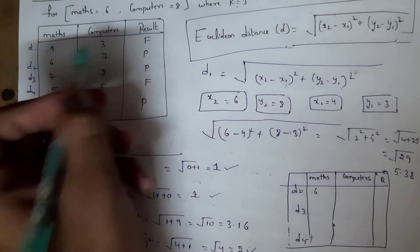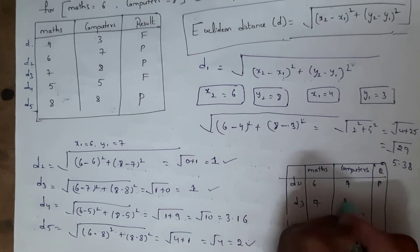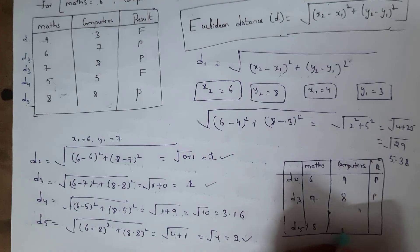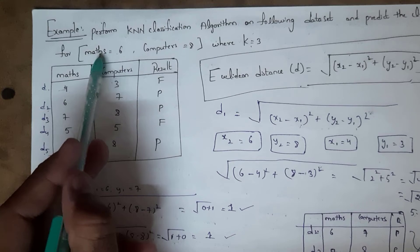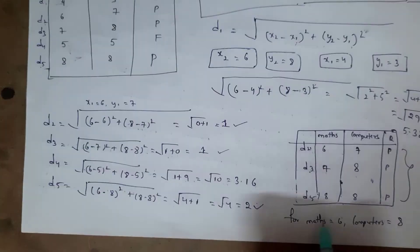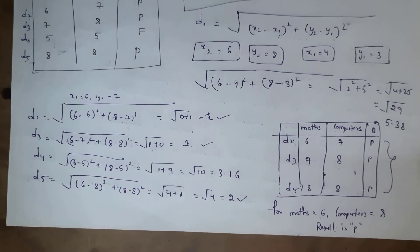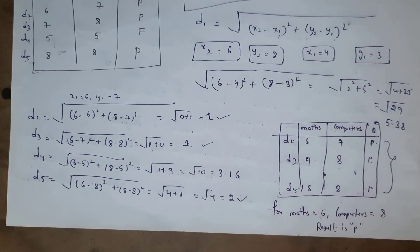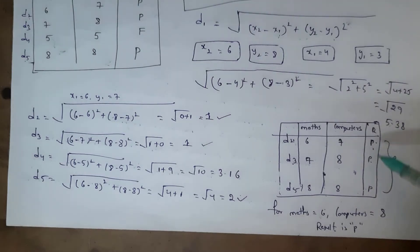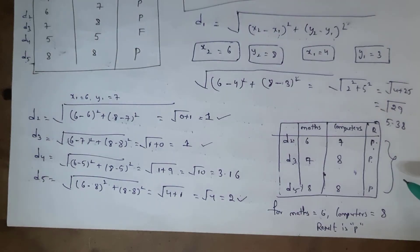D2 (6 math, 7 computers): result is pass. D3 (7 math, 8 computers): result is pass. D5 (8 math, 8 computers): result is pass. The majority result is pass, so for the new student with 6 marks in math and 8 in computers, the predicted result is pass. We assign the new data to the category based on majority vote among the k nearest neighbors.